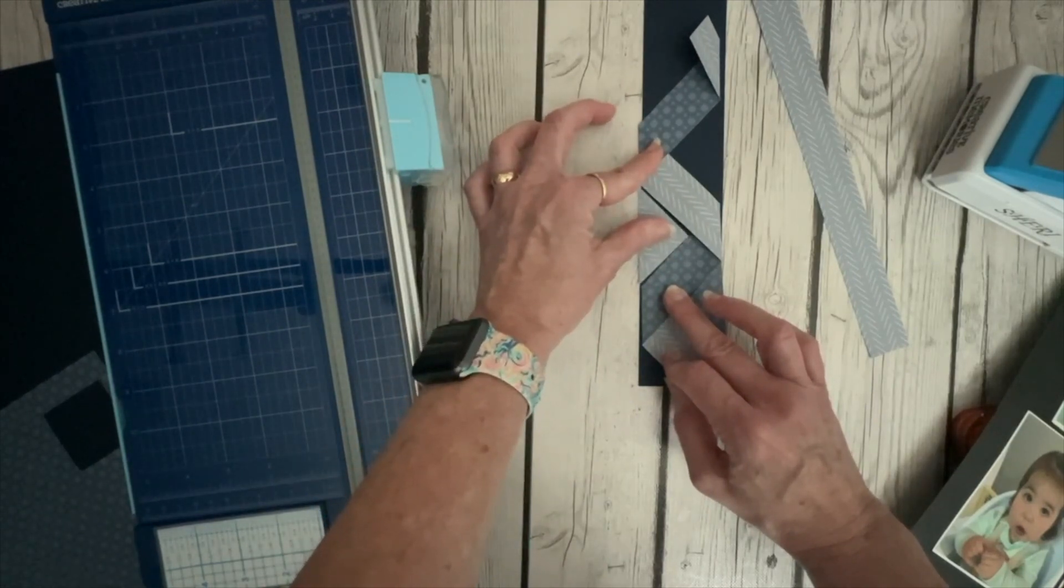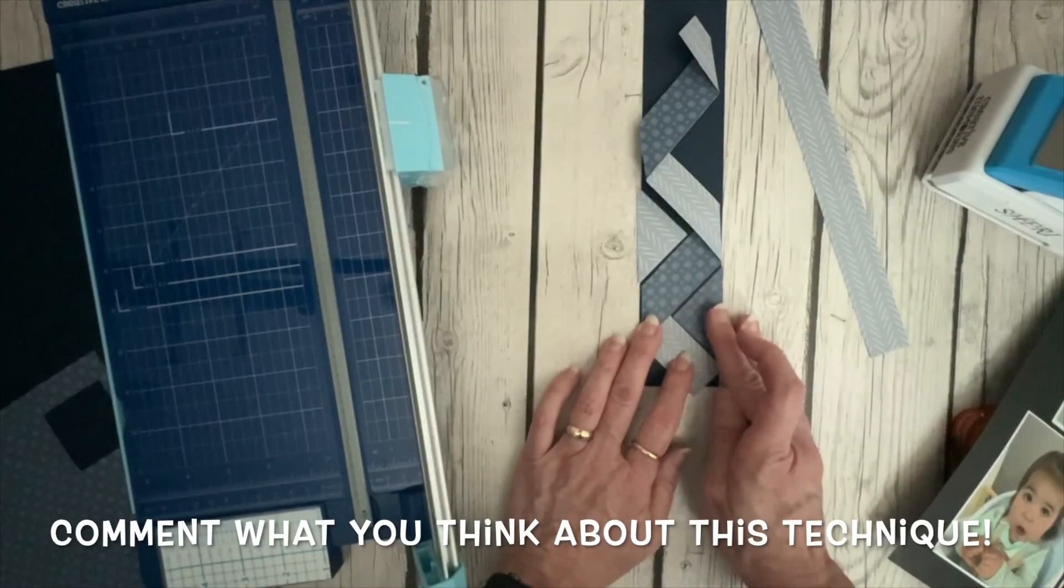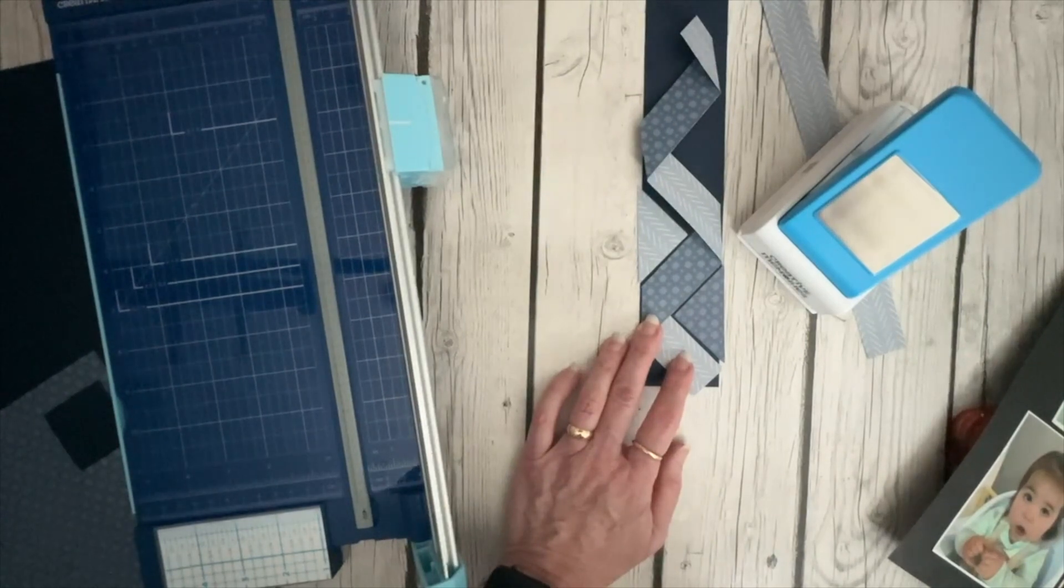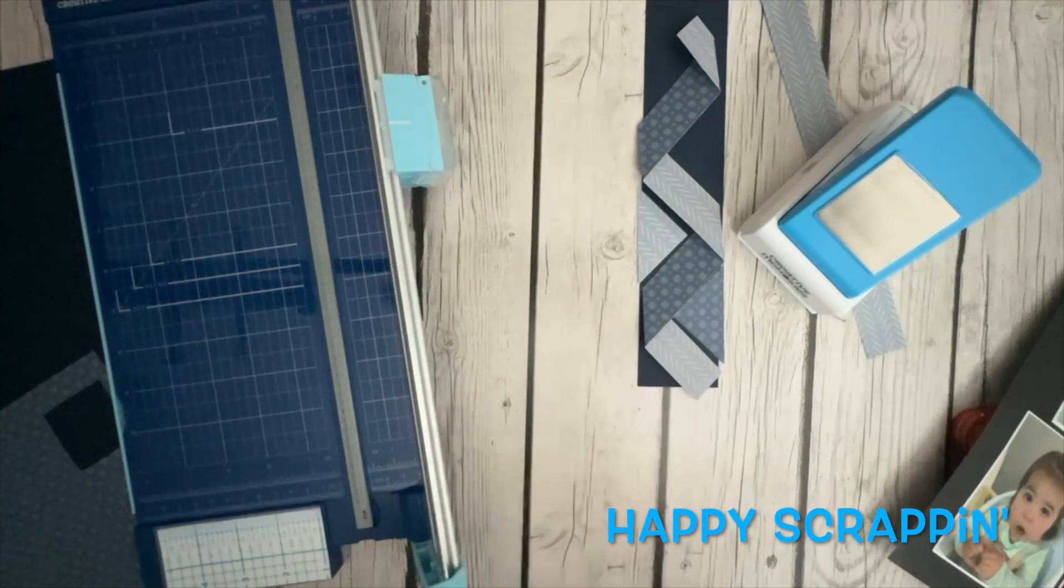Now if I used a totally different color here it would be really pretty, but you don't even have to do that with this navy cardstock showing behind. So a quick easy zigzag border. I hope you enjoy it. Let me know in the comments what you think about this zigzag border. Until next time, happy scrappin'!